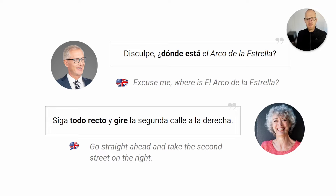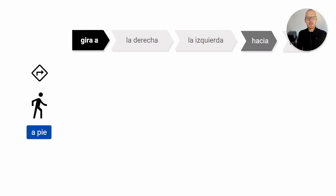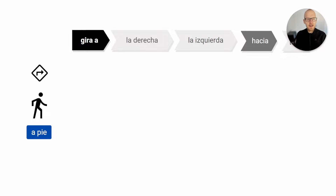There are many ways you can get directions, so let's look at useful vocabulary for the journey. You could hear gira a — as we just saw — gira a la derecha, gira a la izquierda: turn right, turn left. That's the verb girar. The person can also add hacia and the name of a street — meaning turn right towards that street. You can also hear dirígete al norte, sur, este, oeste — go towards north, south, east, or west — which you'll typically see on a GPS or Google Maps. Hacia means headed to, and por means through this street.